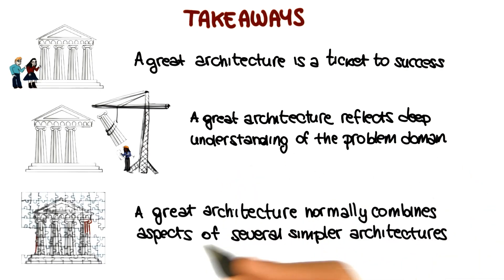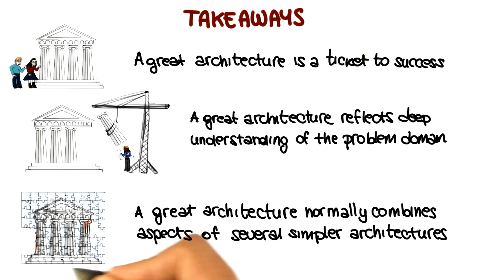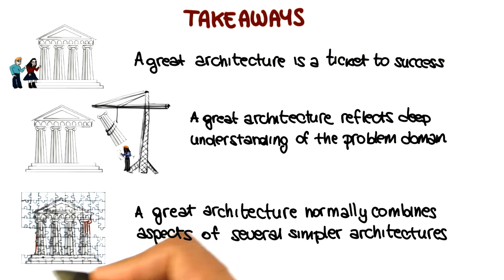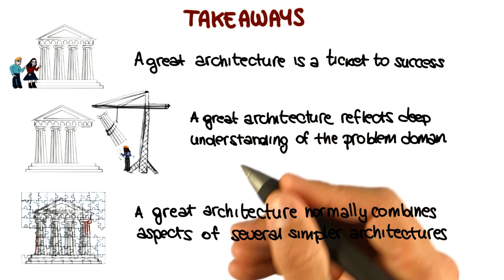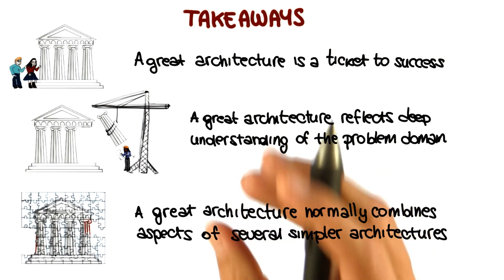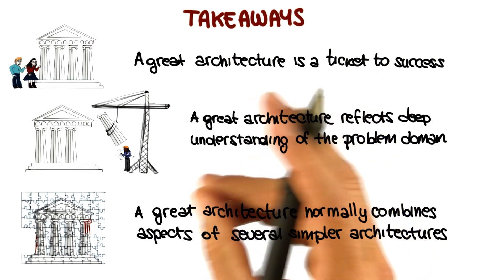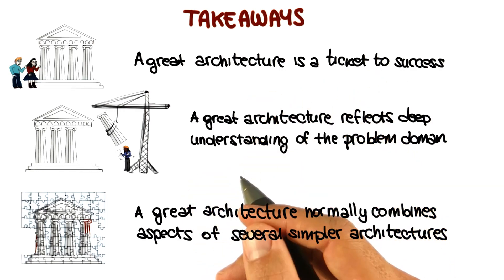Finally, a great architecture is likely to combine aspects of several simpler architectures. It is typical for engineers to see problems that are new, but such that parts of the problems have already been solved by someone else.